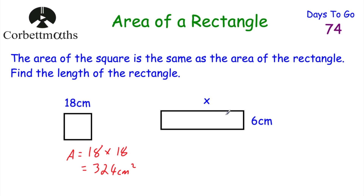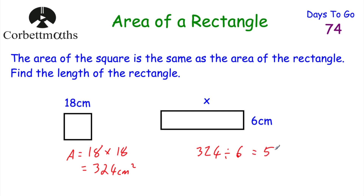The area of the rectangle is the same — 324 centimetres squared. So the length multiplied by the width equals 324. We take 324 and divide by the width of 6: 324 divided by 6 equals 54. So the length of this rectangle is 54 centimetres.